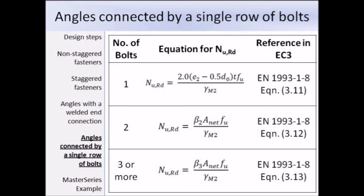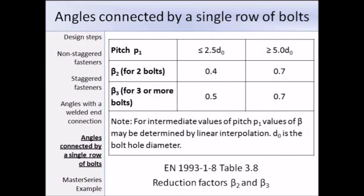Here's how we get the values for beta 2 and beta 3: we need to refer to table 3.8 of EN 1993 part 1-8. Beta 2 and beta 3 are reduction factors and they depend on the pitch of the bolt. We need to work out if the pitch is less than 2.5D0 or greater than 5 times D0, and then we can read off the value of beta. The note below the table tells us that for intermediate values of P1, values of beta may be determined by linear interpolation.